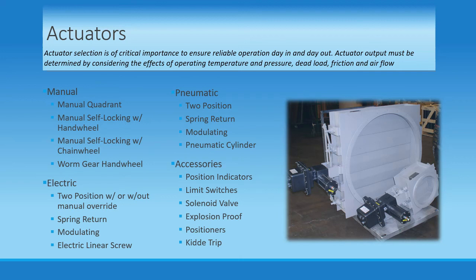Actuator selection is of critical importance to ensure reliable operation day in and day out. Actuator output must be determined by considering the effects of operating pressure and temperature, dead load, friction, and airflow. The choice of an actuator for an industrial damper can be one of the most critical considerations of the entire project, and they are typically custom selected for the specific application. On our pricing software, we handle industrial model operators by offering manual options and a few stock electric and pneumatic actuators, while consulting with the factory for the exact actuator selection and pricing, to merit a second set of eyes in most industrial cases. To cover the variety of operators available through our many manufacturing partners, I will quickly go over each actuator type and some basic accessories.